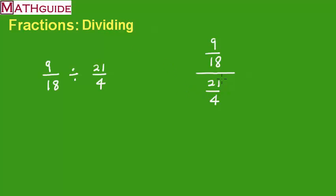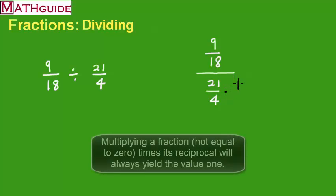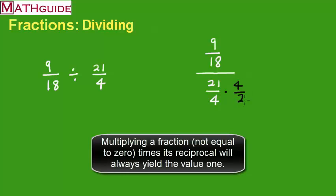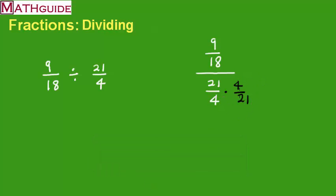Well, if I want to cancel this 21/4ths, I have to multiply it by 4/21sts. If you do that, you can see the 21 is going to cancel with the 21, and the 4 is going to cancel with the 4. So that means I've got to multiply the bottom of this fraction by 4/21sts. But in order for